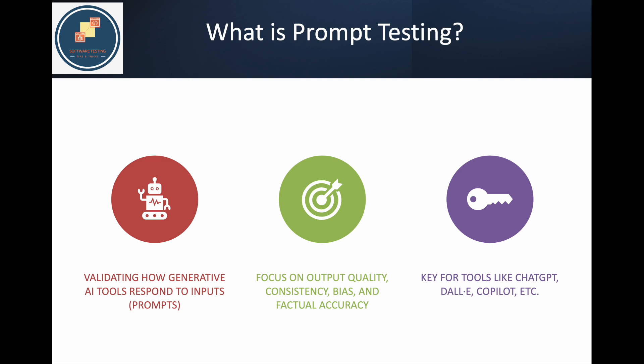Bias and factual accuracy are also important. Factual accuracy means if we ask a fact — like who invented electricity — the answer should always be correct, not some wrong answer. Bias means the model should not favor one group. For example, if you say 'draw a picture of a CEO' and every time it draws a male and never a female, that is biased. This can create issues. For tools like ChatGPT and GitHub Copilot, checking the response quality is key.